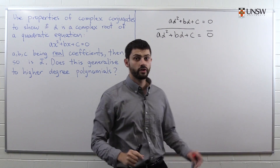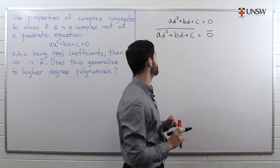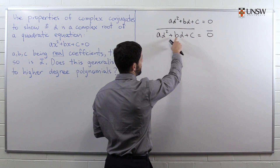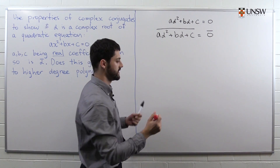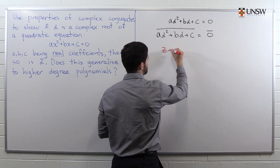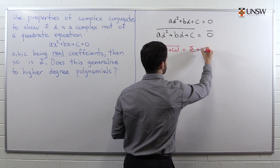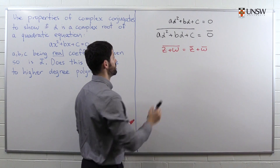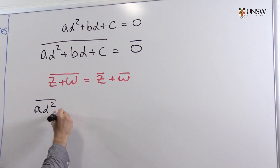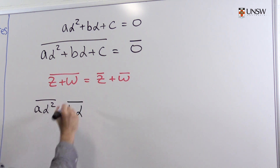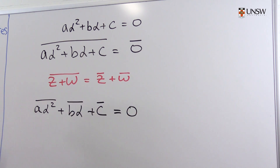Now we're going to use the properties of complex conjugates to simplify this. First of all, the conjugate of zero is zero. Another property we're going to use is that if we have sums of complex numbers and we take the conjugate, we can first take the conjugates and then take the sum. So for two complex numbers z and w, the conjugate of their sum equals the sum of their conjugates. Applying this, we get: conjugate of (a·alpha squared) plus conjugate of (b·alpha) plus conjugate of c equals zero.